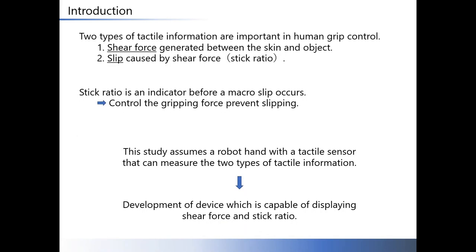Two types of tactile information are important when humans grab objects. The first is the shear force that occurs between the human skin and the object. The second is slip caused by shear force.